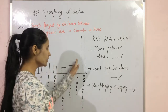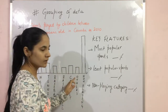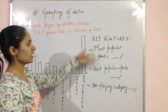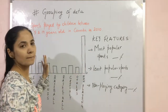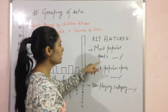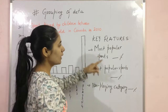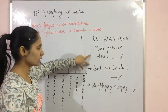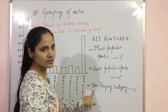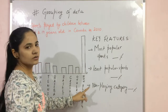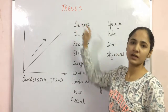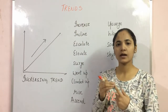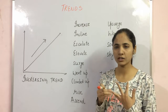We have the non-playing category as well. These are the key features of this bar graph, and we can explain them in BP1 and BP2. BP1 can cover the first two categories — most popular and least popular — and the last category, non-playing, can be discussed in BP2. Now, moving to trends: there are basically three types of trends — increasing, decreasing, and fluctuating.